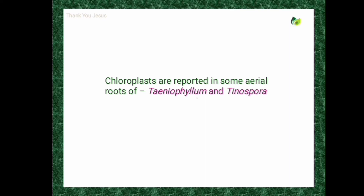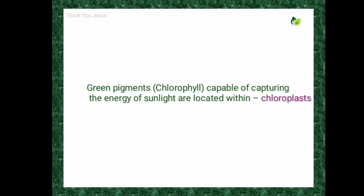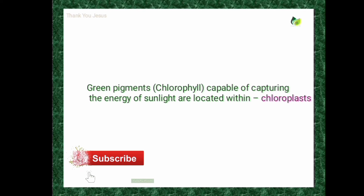Chloroplasts are reported in some aerial roots of Tinospora and Taeniophyllum. Green pigments capable of capturing the energy of sunlight are located in the chloroplast. Generally chlorophylls and carotenoids are present in thylakoid membranes. Chlorophyll is the chief component found in all photosynthetic plants.